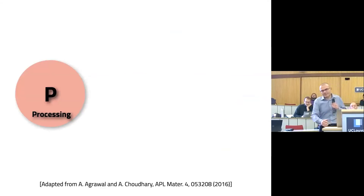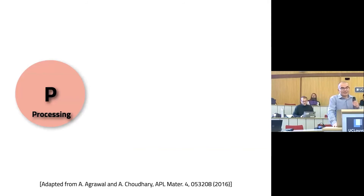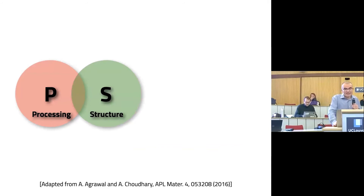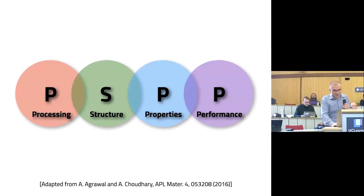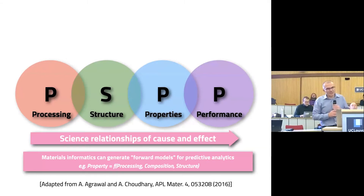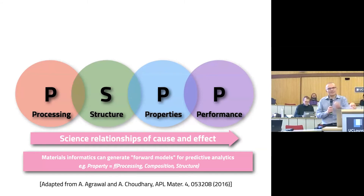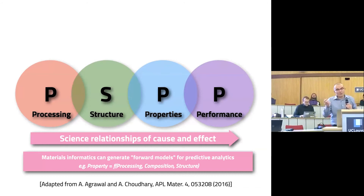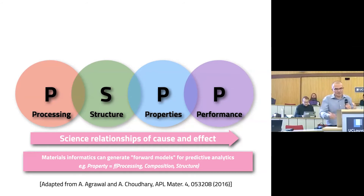In all cases, what machine learning will be used for is this idea of going from the processing condition used to synthesize a material, then the structure that material gets, then moving from structures to properties, and finally getting the performance of the material. This relationship is one of cause and effect: the process induces a given structure, the structure induces the properties, and the properties induce the performance. Materials informatics can generate forward models that allow you to predict, for instance, the property as a function of the processing condition, the composition, and the structure.